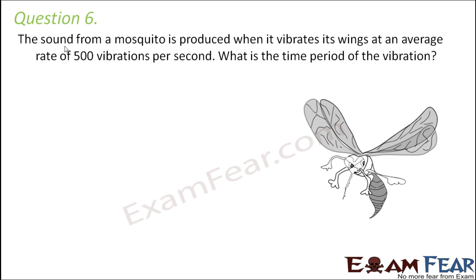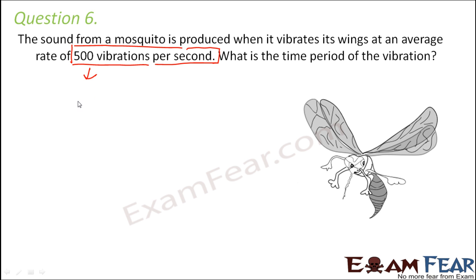Question number 6. The sound from a mosquito is produced when it vibrates its wings at an average rate of 500 vibrations per second. What is the time period of the vibration? The number of oscillations taking place per unit time is given as 500. This is nothing but frequency. So frequency, which we normally denote as nu, is given as 500 vibrations per second.